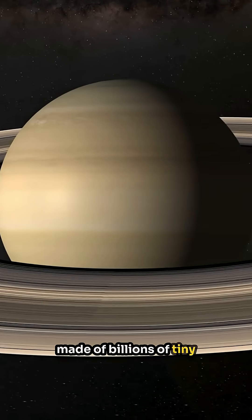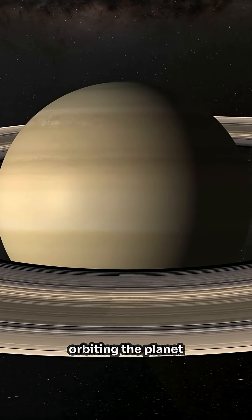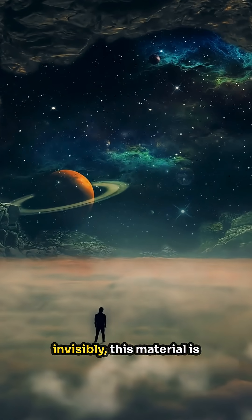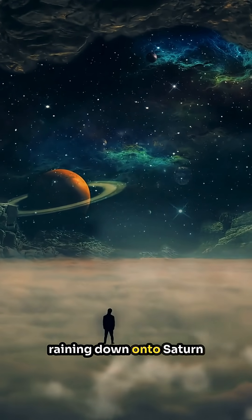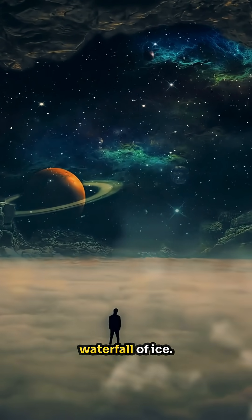Saturn's rings are made of billions of tiny pieces of ice and rock, orbiting the planet for millions of years. But slowly, almost invisibly, this material is raining down onto Saturn, like a shimmering waterfall of ice.